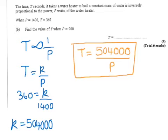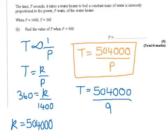Now to find the value of t when p is 900, we use this formula. So t equals 504,000 divided by 900, which gives us t equals 560.